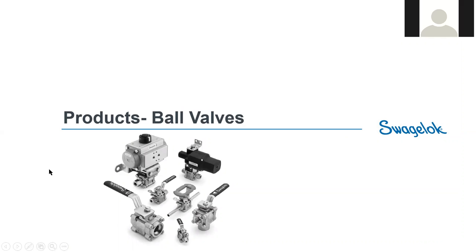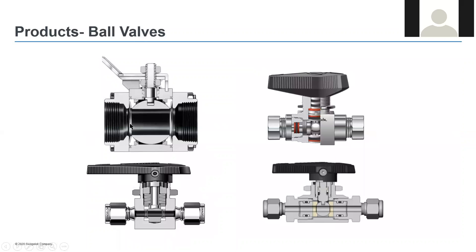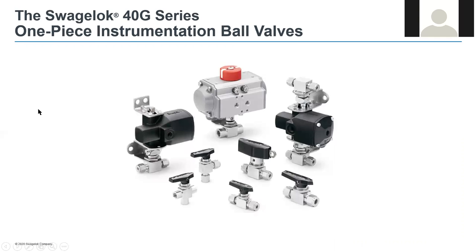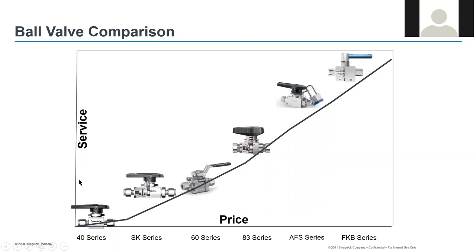We're going to get into ball valves to start. Ball valves are some of the most common on-off valves you will likely see. These are some of the offerings Swagelok has for ball valves. The first one we're going to talk about today is the 40G series, the one-piece instrumentation ball valve. This is a quick overview of the ball valves we offer — the 40 and 60 series are what we'll focus on today, but we do have additional valves for chemical compatibility, high temperature, aggressive service, and high pressure.